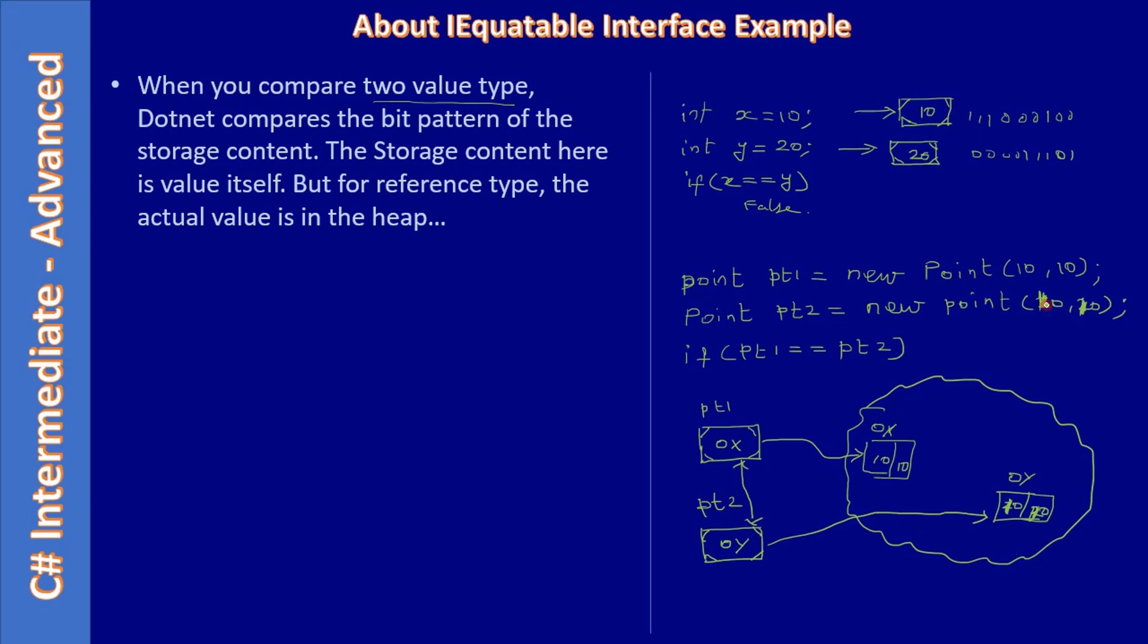The second point also has value 10, 10, but the address locations are different. Why? Because here there is a new keyword, and here also there is a new keyword. We will create two heap locations, and definitely they will be at two different addresses. When you use the equality operator, these two contents vary and this will return false.